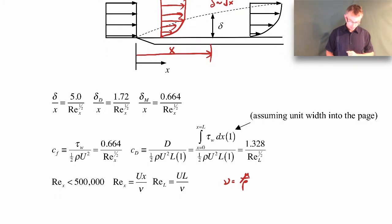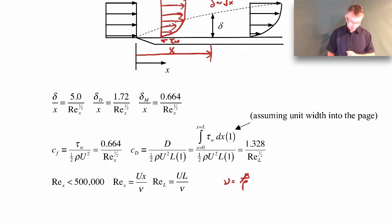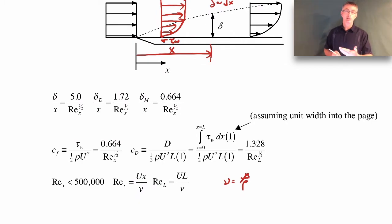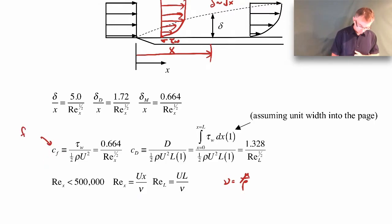Other quantities of interest are the wall shear stress — the shear stress acting at some point on the wall, tau_w. It's presented as a dimensionless quantity: the wall shear stress made dimensionless by the dynamic pressure of the free stream. That equals 0.664 over the square root of the Reynolds number. Notice this looks very similar to the momentum thickness expression — when you deal with forces, the momentum thickness usually shows up. This is called the friction coefficient, which is just a dimensionless wall shear stress.